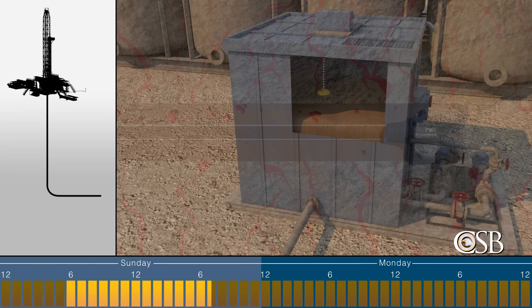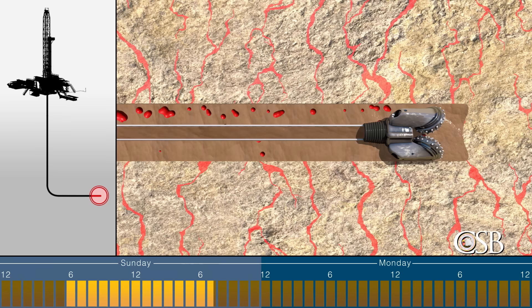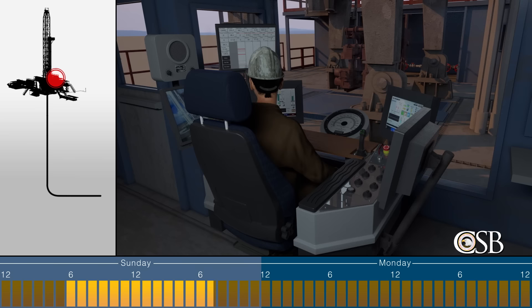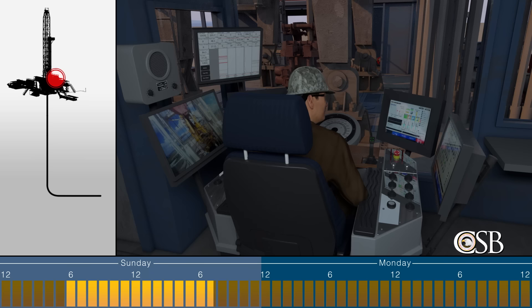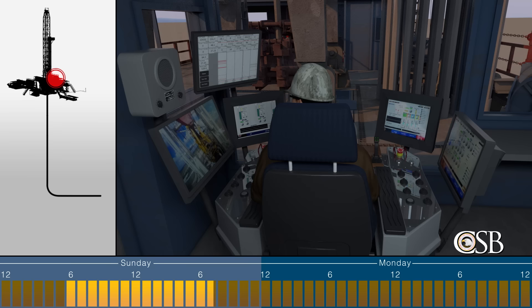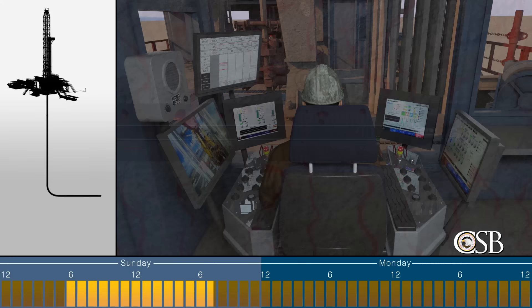The crew started removing the drill pipe at 6:47 p.m. The CSB found that while tripping the drill pipe from the horizontal section of the well, not enough mud was pumped and gas entered the well. The driller who was controlling the operation from inside a building on the rig called the driller's cabin did not see the discrepancy. That is because he had not been sufficiently trained on a new electronic version of a trip sheet, which is a form used to monitor and calculate whether a well is taking the proper amount of mud during tripping.